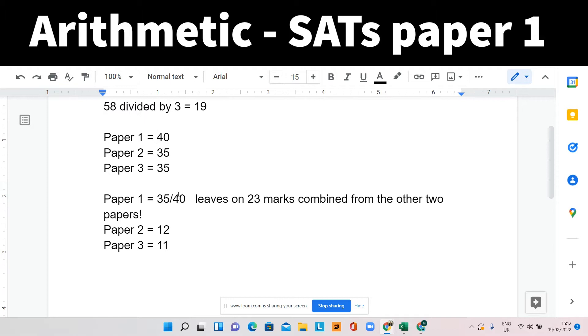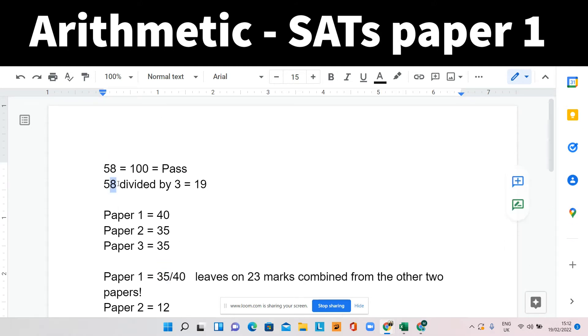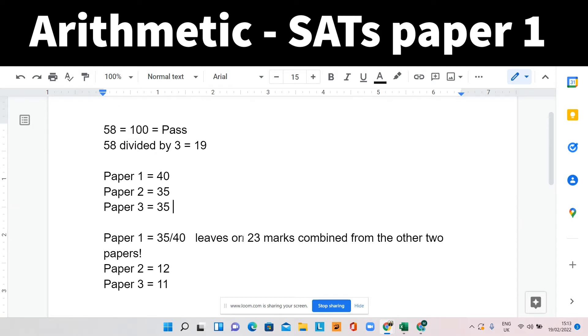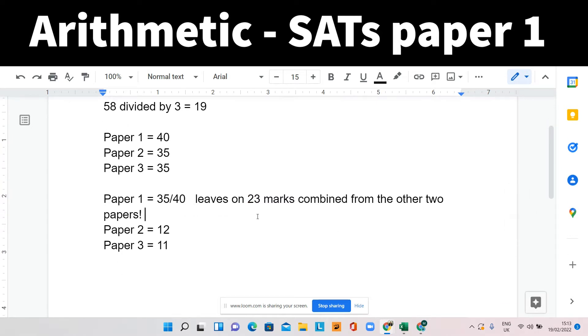So 35 out of 40. If we take away 35 from the total of 58, which is the pass mark over the three papers, it leaves us with only 23 marks combined required from the other two papers. Now, just have a think about that for a second.